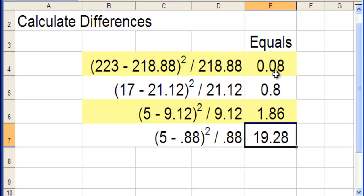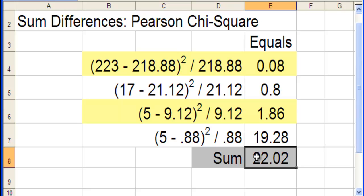Now to get the Pearson chi-square value, there's only one step left really in the calculations, we simply have to sum these four values. And that gives 22.02. That's the Pearson chi-square value in this 2x2 table analysis.